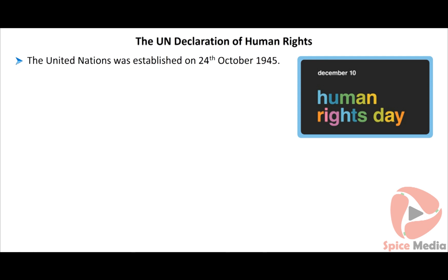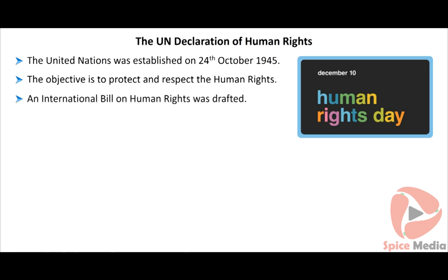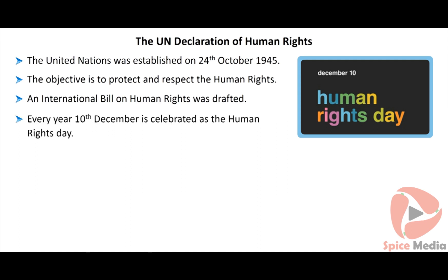The United Nations was established on 24th October 1945. Its objective is to protect and respect human rights. To frame the principles of human rights, a commission was established and an international bill on human rights was drafted. This international bill was adopted by the UN General Assembly on 10th December 1948.